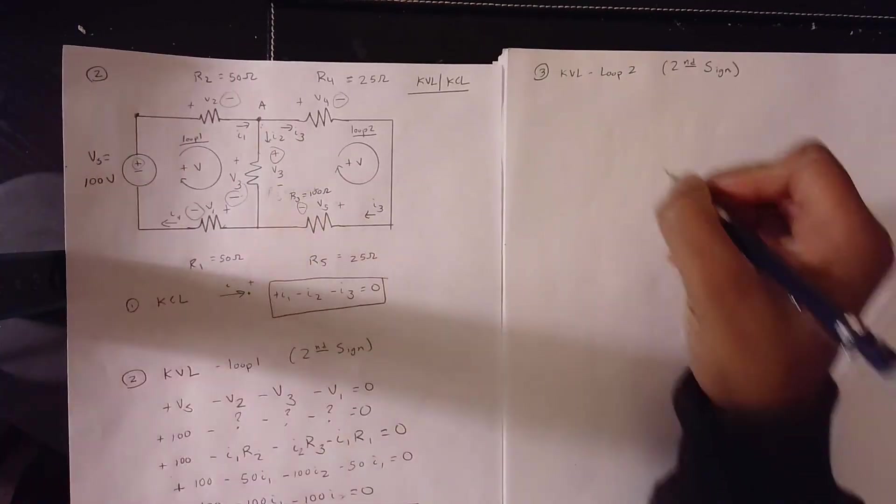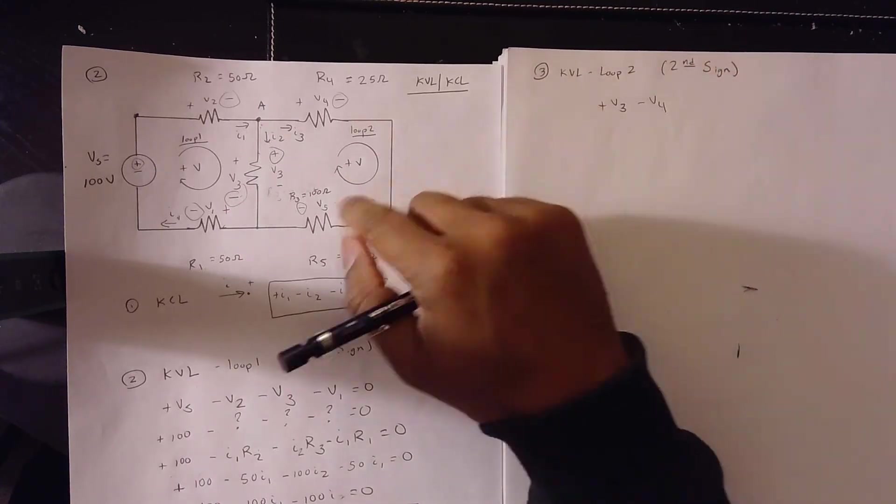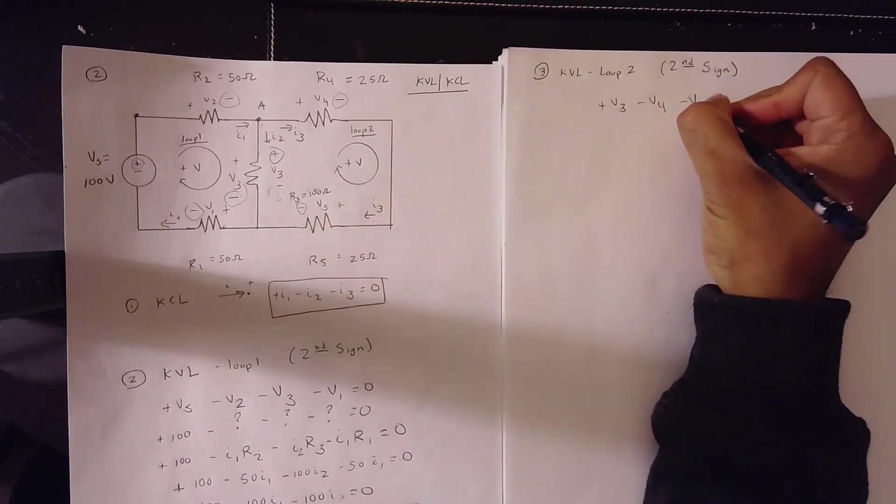Plus V3 minus V4 minus V5 is equal to 0.